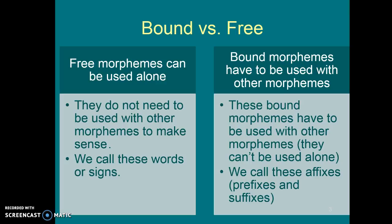Free morphemes are morphemes that can be used on their own to have meaning. We call these words or signs. I don't need to say anything else other than 'book' for you to have the idea of a book, or 'sit' for you to have the idea of sit. By themselves, they can occur — book can be used alone, sit can be used alone.